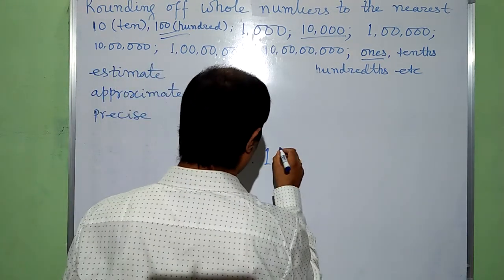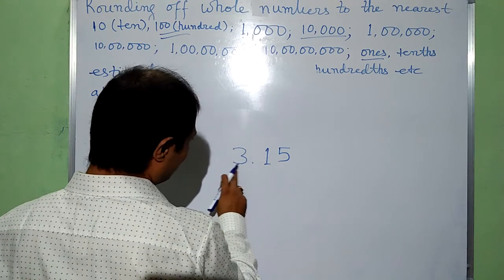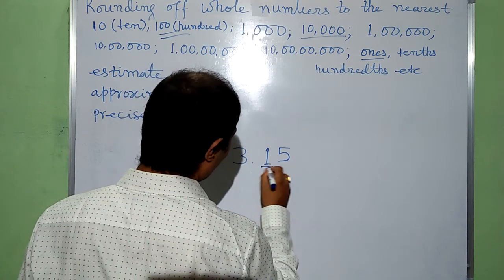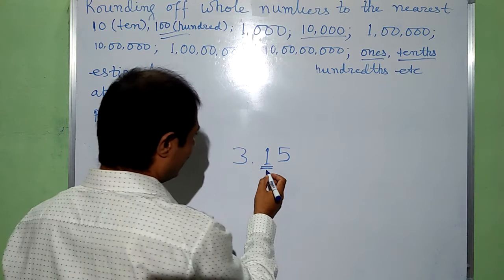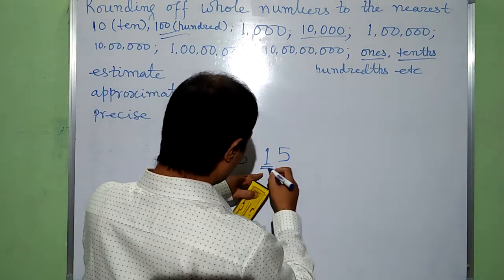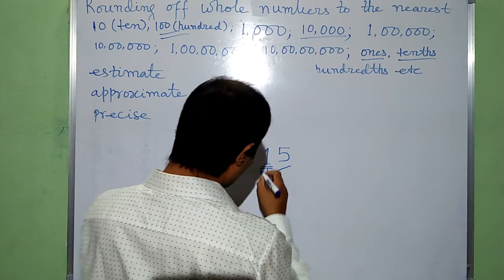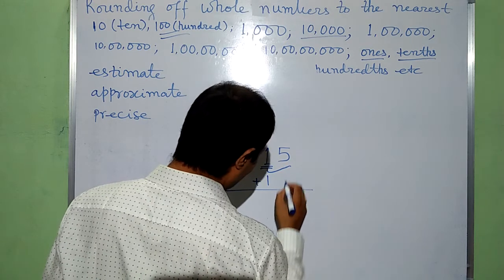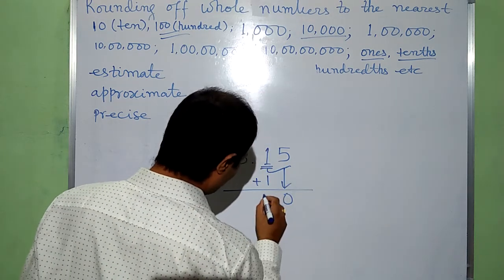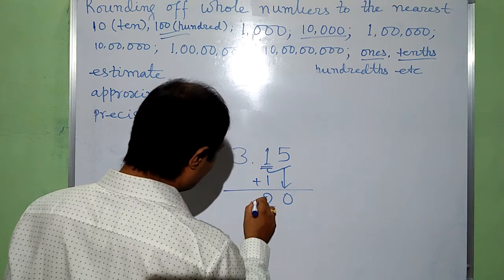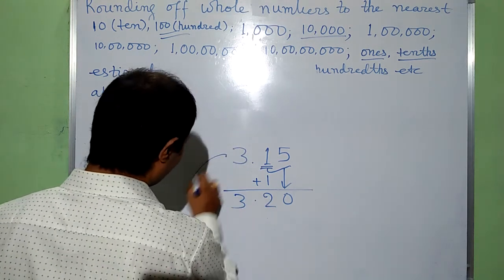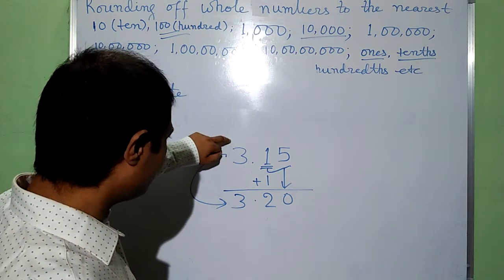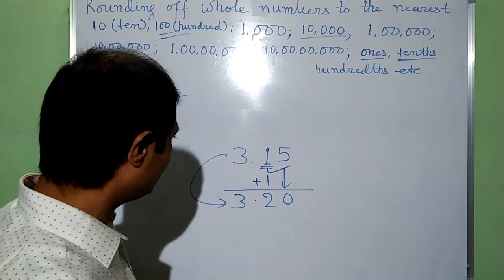Now, suppose there is a decimal number such as 3.15. At the ones place we have 1 and at the tenths place we have 5. We have to round this to the nearest ones. We look at the digit to the right of the ones digit — that is 5. Since 5 is 5 or greater, we add 1: 1 plus 1 gives 2. The decimal part is changed to 0. So 3.15 rounds to 3.20, which is rounding up.